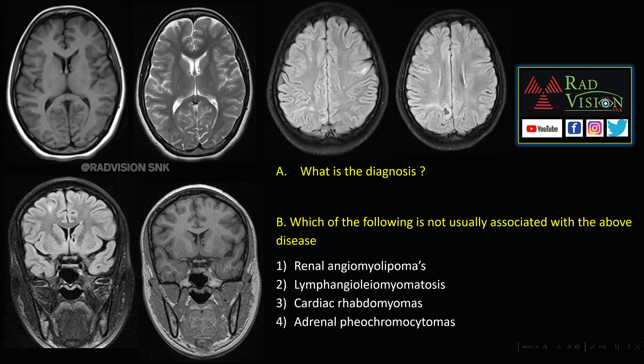The diagnosis is tuberous sclerosis. Which of the following is not usually associated with tuberous sclerosis? Renal angiomyolipomas, lymphangioleiomyomatosis, and cardiac rhabdomyomas are commonly seen in tuberous sclerosis, whereas adrenal pheochromocytomas are less likely to be seen.